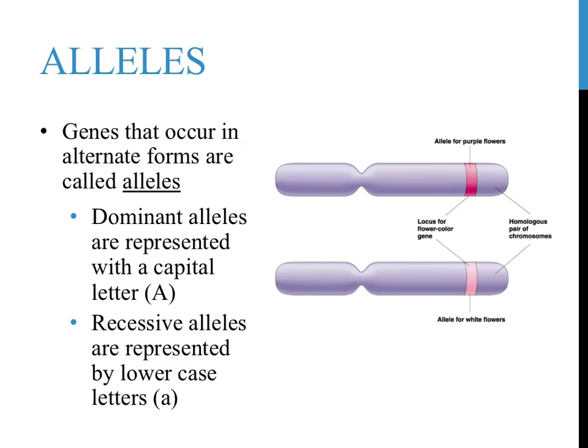Sometimes one of these alleles can cover up or mask a second form of the gene. The allele that covers up or masks the other is referred to as a dominant allele, and they are represented in Punnett squares by capital letters. Those that are covered up or masked are referred to as recessive alleles, shown in Punnett squares as lowercase letters.